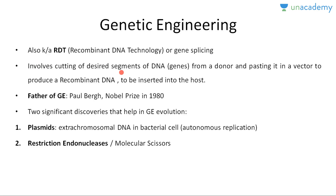It involves the cutting of desired segments of DNA — that is, a gene of interest — from a donor organism, and pasting it into a vector to produce a recombinant DNA. This vector is also a DNA in which we paste the gene of interest to form the recombinant DNA. This recombinant DNA is then transferred to the host for its maintenance and multiplication. Paul Berg is the father of genetic engineering; he got the Nobel Prize for his experiments in 1980.